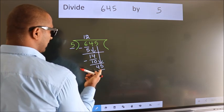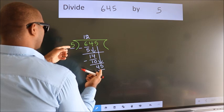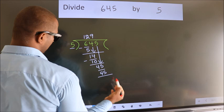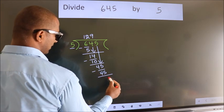When do we get 45 in 5 table? 5 nines, 45. Now, we subtract. We get 0.